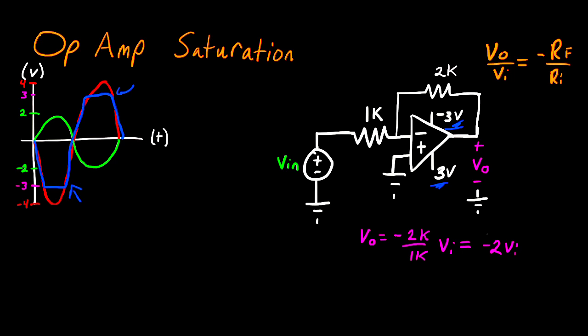But the important thing to know is that if you calculate the voltage should be one thing, but that happens to be outside the range of the rail voltages connected to your op-amp, make sure instead that you write that the op-amp reaches its appropriate limit, whether that's the positive rail or the negative rail.